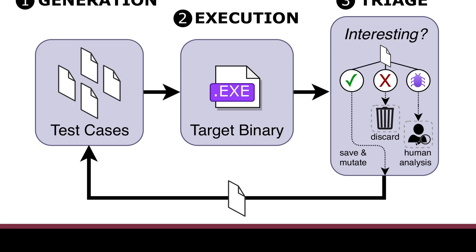In more detail: first we generate the test case, then execute the target binary, then triage the result. If the program didn't do anything particularly interesting, we throw that input away. If it did something kind of interesting, we save it to use as the basis for future test cases. If it did something really interesting — maybe indicating a bug, maybe a crash — we set that input aside so a human can look at it later and determine what underlying bug the test case uncovered.